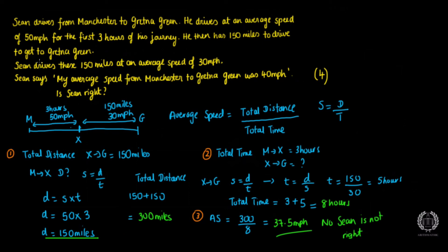So in your answer you write: no, Sean is not right, because the average speed is 37.5 miles per hour, which is less than the 40 miles per hour he stated. Essentially what we did was look at the average speed as total distance over total time for the full journey from Manchester to Gretna Green — partitioned as M to X and X to G. Step one: total distance. Step two: total time. Step three: divide to get average speed and compare. If there's anything you don't understand, put it in the comments and I'll get back to you. See you on the next one!